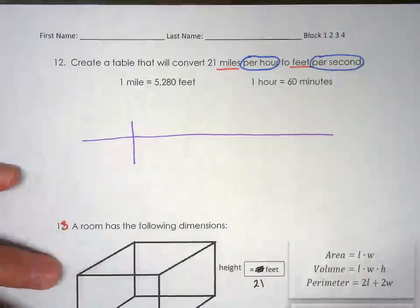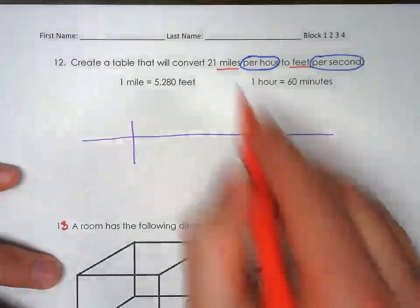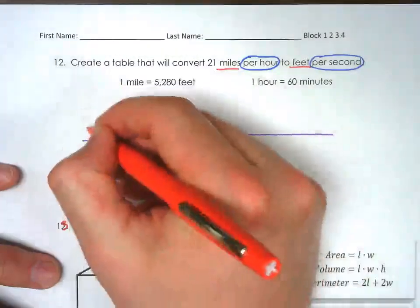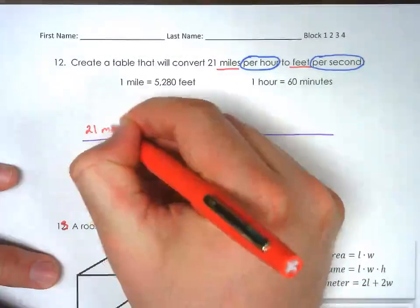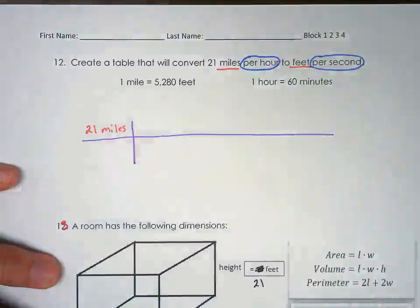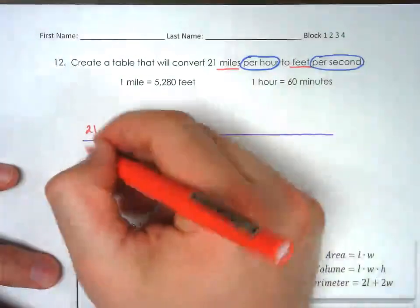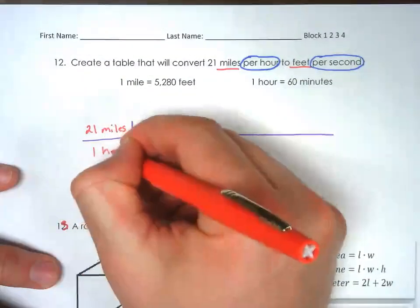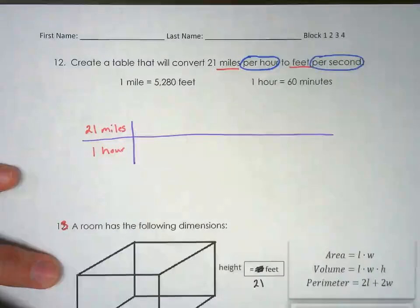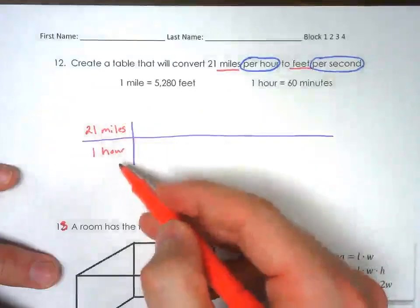So what are we given? We're given 21 miles per hour. So 21 miles, and then per hour, so that's one hour.